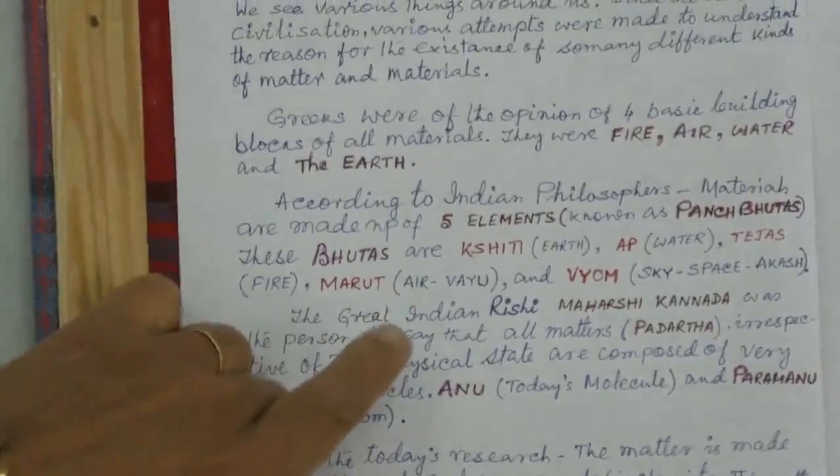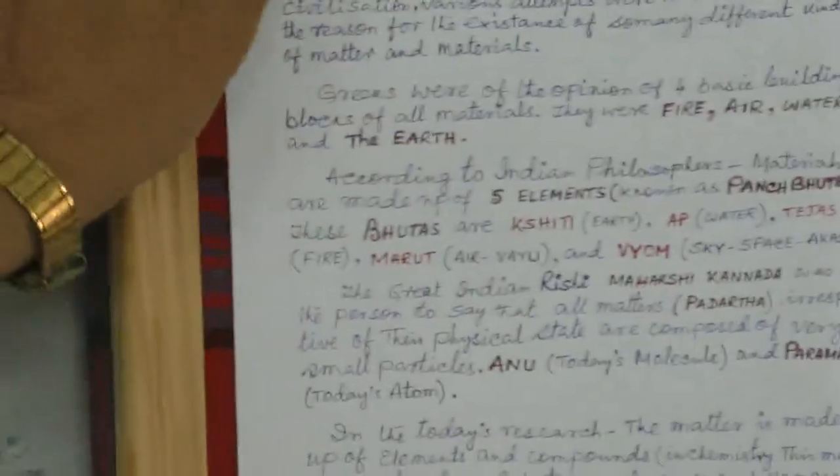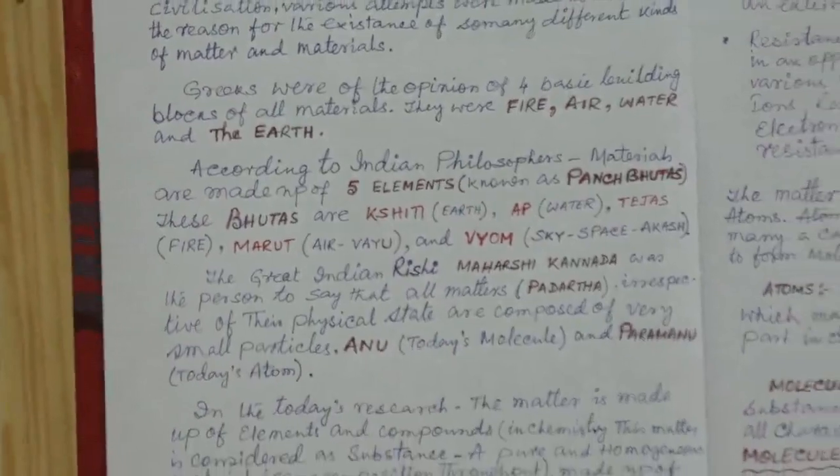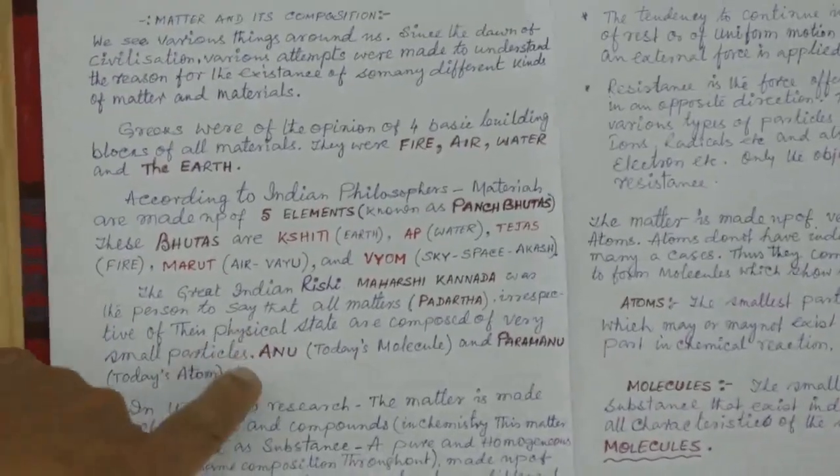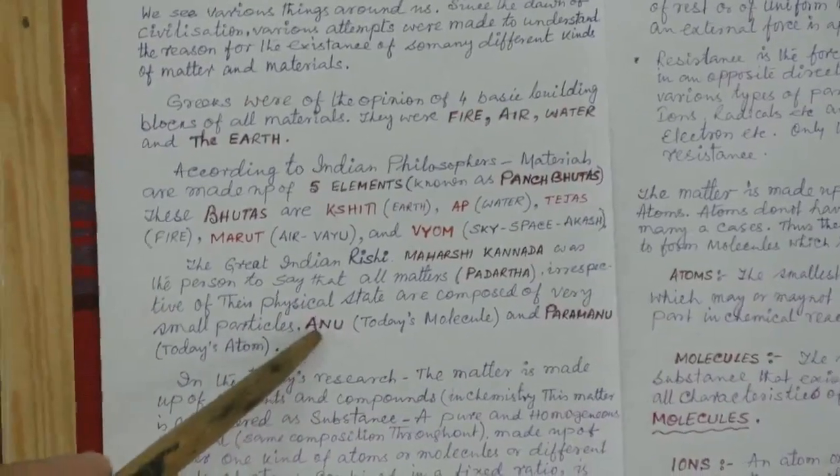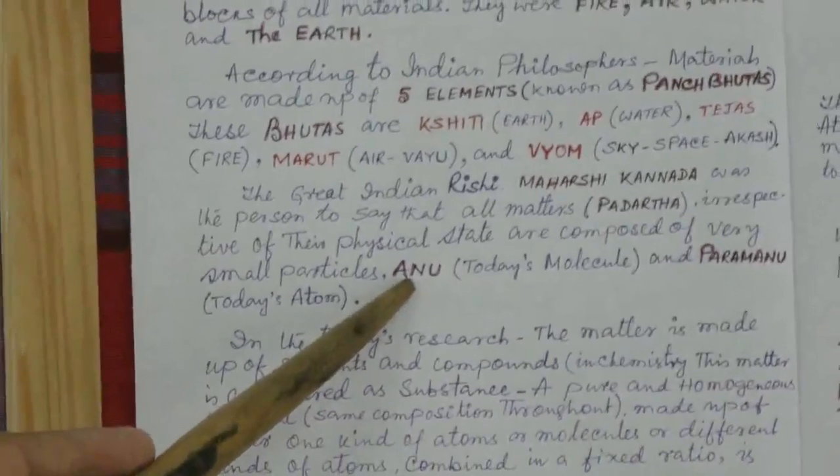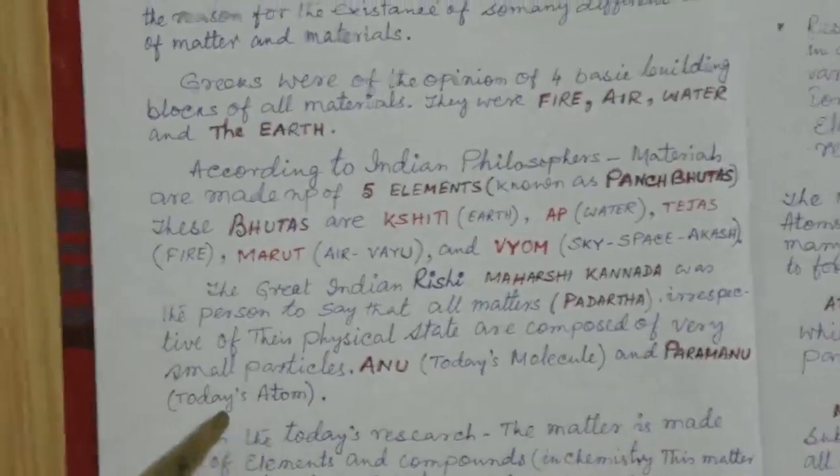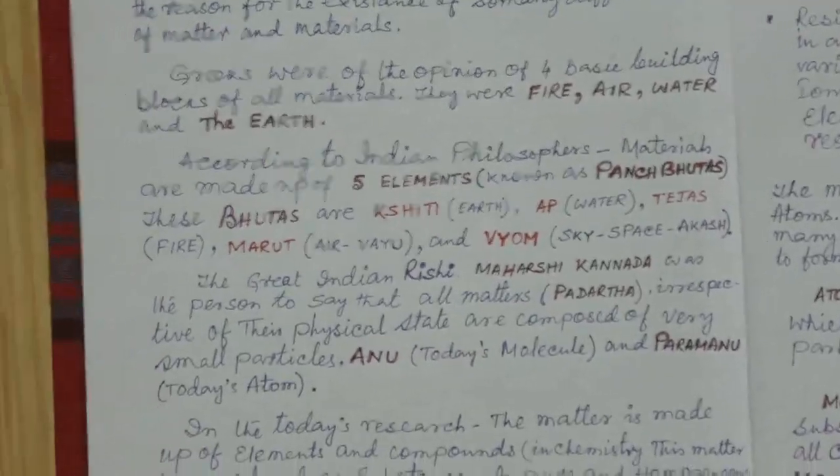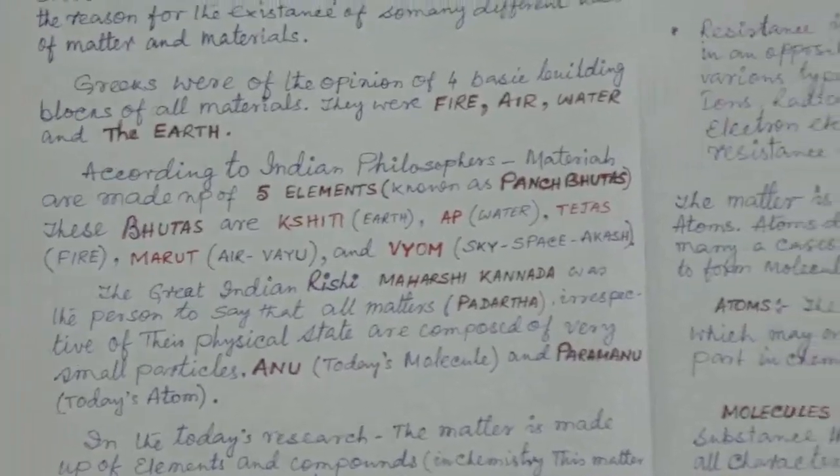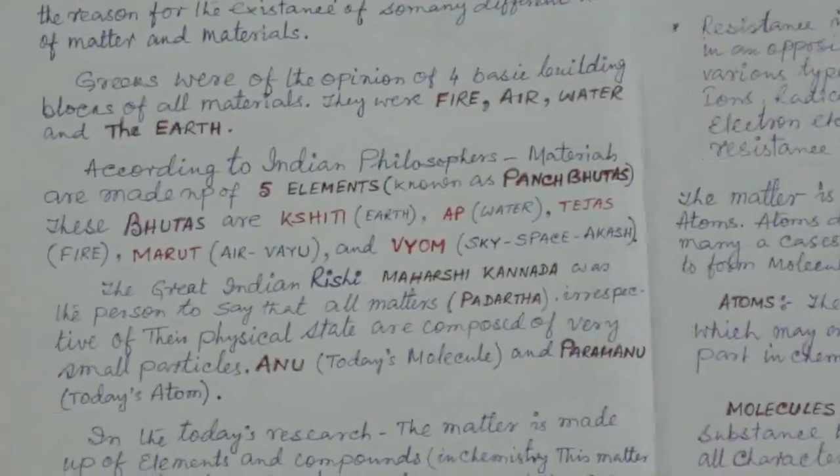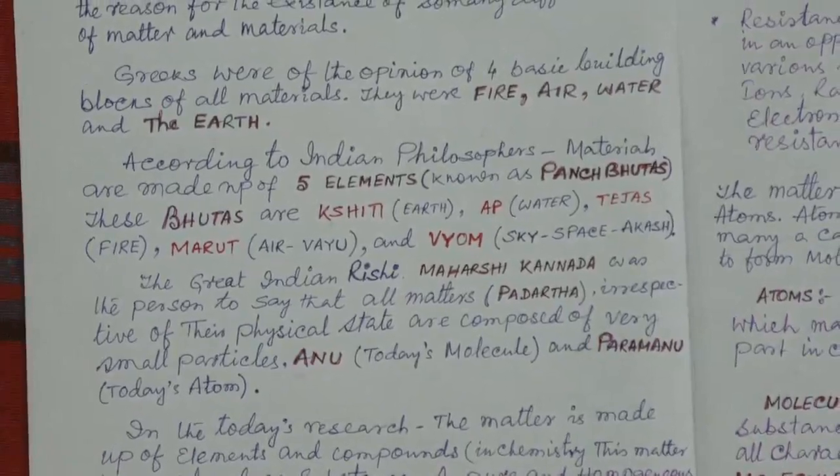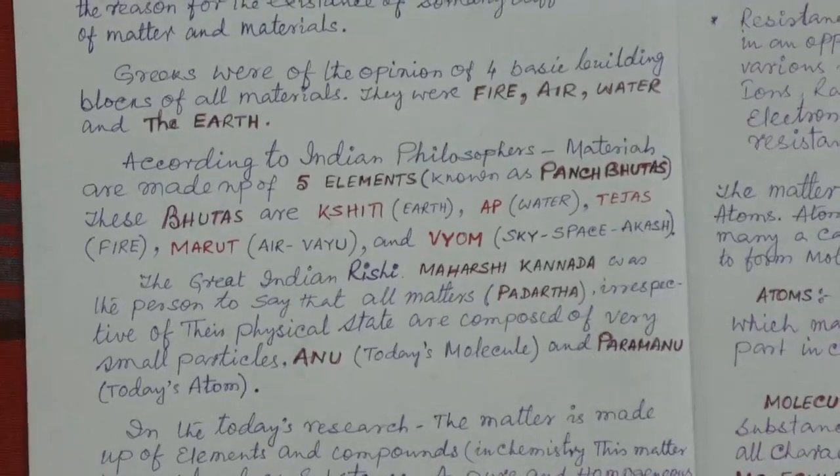Ancient Indian Rishi Maharshis, they considered these all are as for the earth and he said they are made up of fine components, fine particles called Anu, today's molecule we call them, and Paramanu, Paramanu, Paramanu, absolute particle, that is for atoms. Modern science, John Dalton also has brought the same concept but much later, that matter is made up of Anu means the molecules and Paramanu means the atoms.